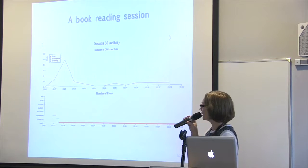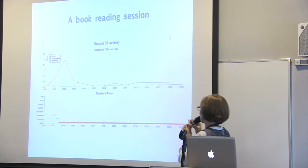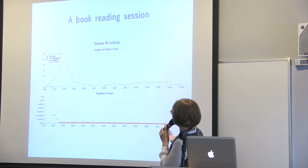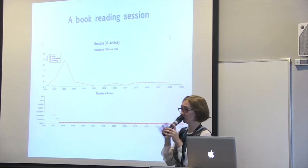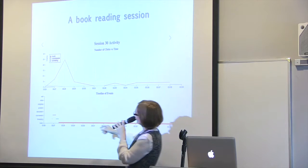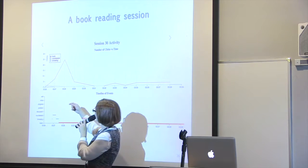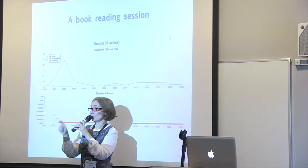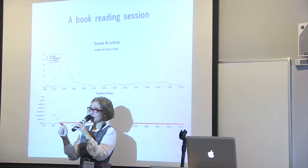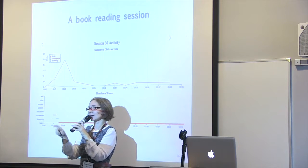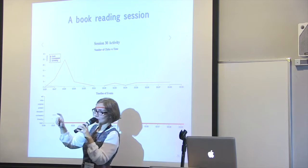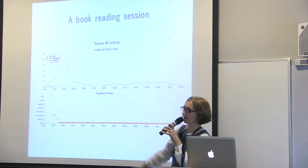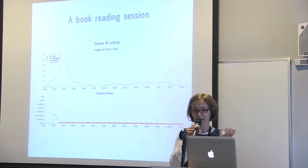We want to look at many of the sessions that users had. Here is just a short maybe 12-minute book reading session. We know it's a book session because we know there is a book event. At the beginning there are a lot of clicks — you're trying to find the page you want to start reading — next, next, next. Once you find the page your click pace is like one per minute, and then you're done reading.